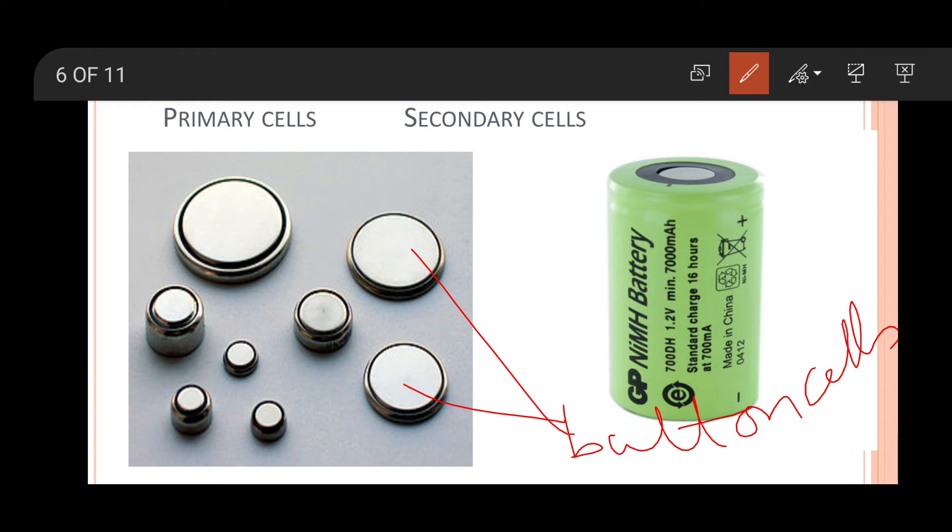The second type of cells are your secondary cells. These are rechargeable cells. We can recharge them at regular periodic time. After recharging, they can be used for quite a longer time again and again. Your car, scooter, inverters—they use such types of rechargeable batteries.